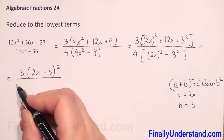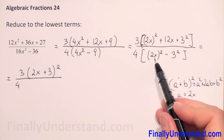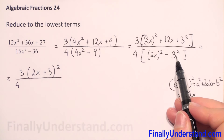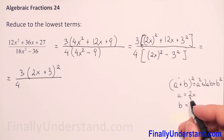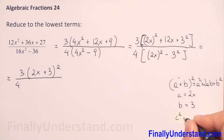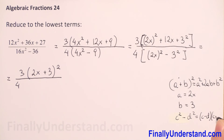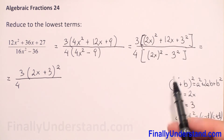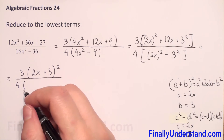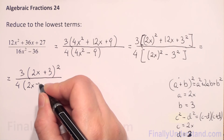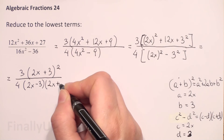In our denominator, we copy the 4, and what we have is 2x to the second power minus 3 to the second power. This is the difference of two perfect squares. The formula is: c² − d² = (c − d)(c + d). In our example, c is equal to 2x and d is equal to 3. So we will have in parentheses (2x − 3) times (2x + 3).